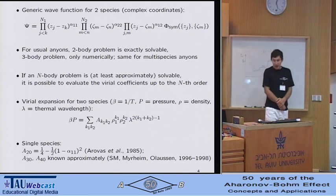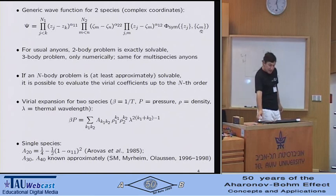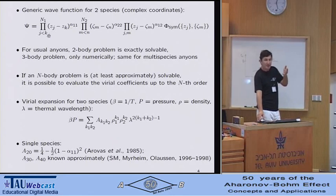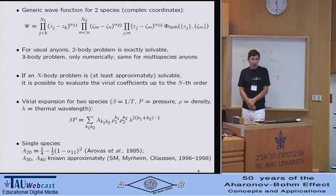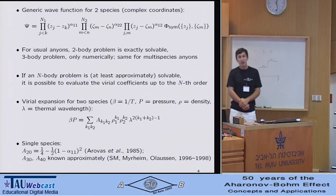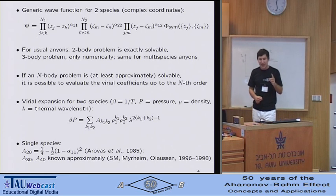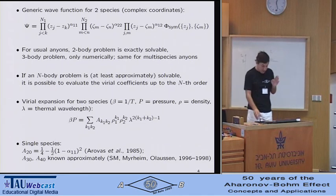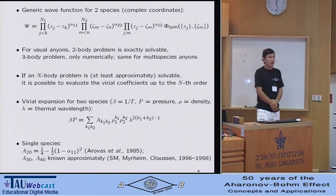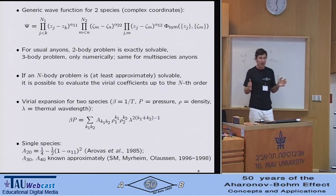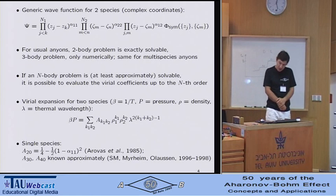Well, this wave function is non-trivial because the coordinates here are really entangled. With a fractional alpha, you cannot expand this as a binomial in terms of single particle wave functions. And as a result, it's only the two-body problem, as originally showed by Wilczek, that is exactly solvable. But even the three-body problem can only be solved numerically, although there is a subset of states that can actually be found exactly. This holds true for usual single-species anyons, and this holds true for multi-species anyons alike.